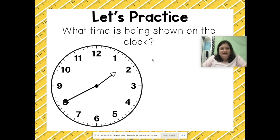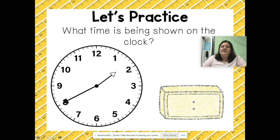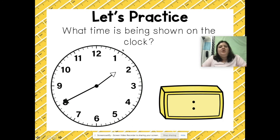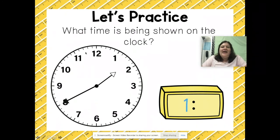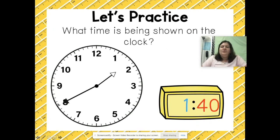Let's practice one more. Looking at the hour hand, it looks like it's between the 1 and the 2, so I need to go backwards and look at the last number the hour hand passed, which is the 1. Now I'll count up my minutes starting at the top: 0, 5, 10, 15, 20, 25, 30, 35, 40. So the time being shown is 1:40.